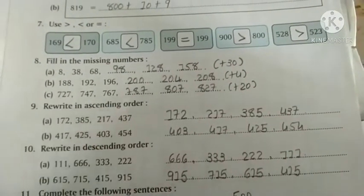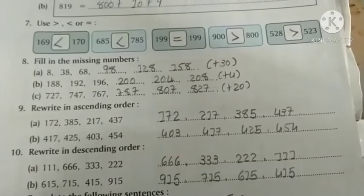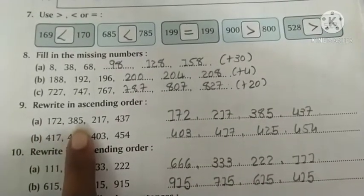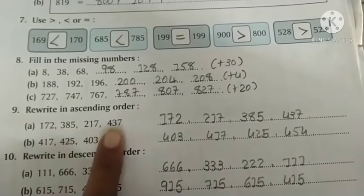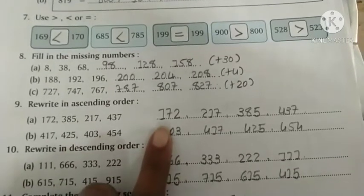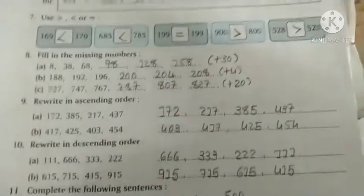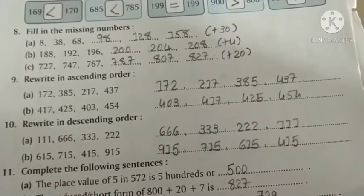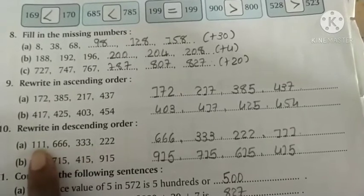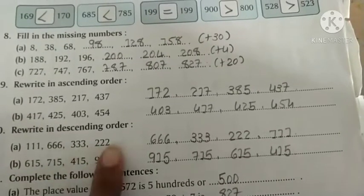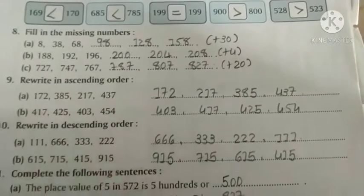Question 9, rewrite in ascending order. Ascending means smallest to largest, like climbing up. Check the first digits: here is 1, 6, 3, and 2. So write 1 first, then 2, then 3, then 6. Next is descending order. Descending means largest to smallest, like the dinosaur is big. For these numbers, first digits are 1, 6, 3, and 2. So 6 is biggest, then 3, then 2, then 1.